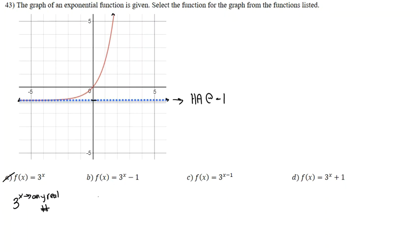Option b is 3 raised to the x, which again is any real number, minus 1. The horizontal asymptote for this function is negative 1. And looking at our graph, let's go ahead and plug in a test value.